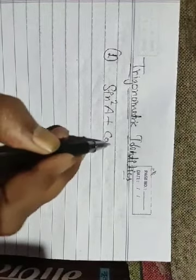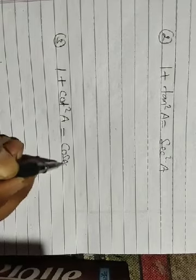Hi everyone, today again we are here with our chapter on trigonometric identities. Yesterday we discussed trigonometric identities, and today we are again working through some selected examples. Yesterday we derived three identities: the first is sin²a + cos²a = 1, the second is 1 + tan²a = sec²a, and the third is 1 + cot²a = cosec²a.